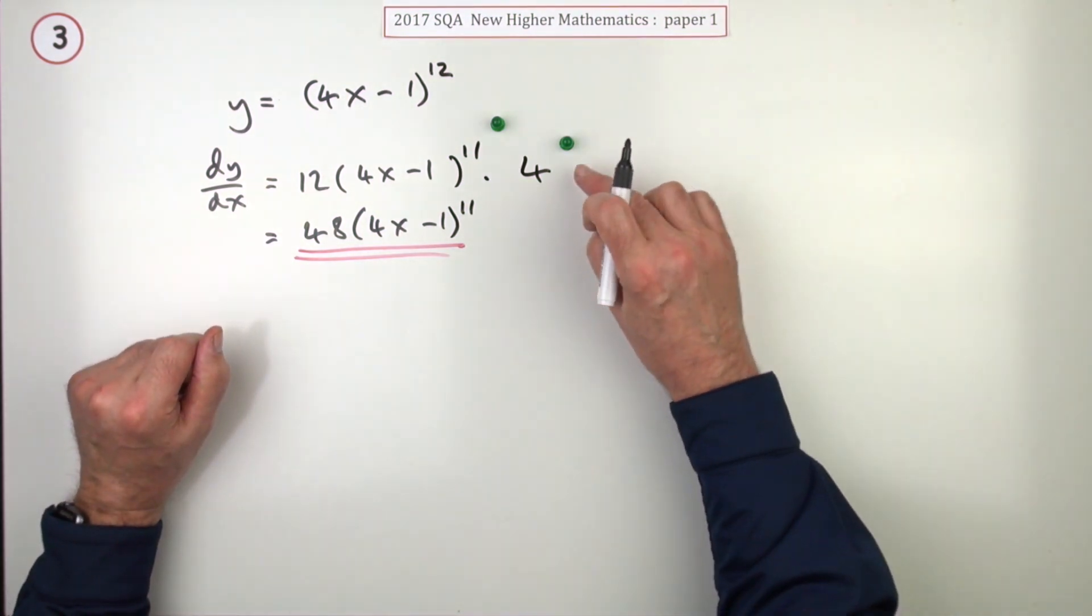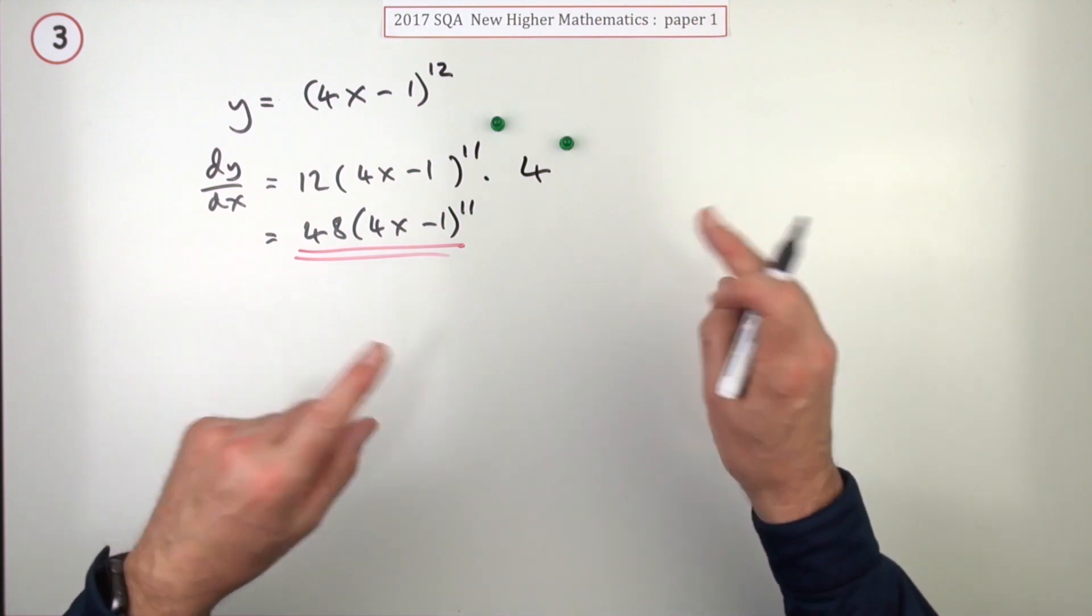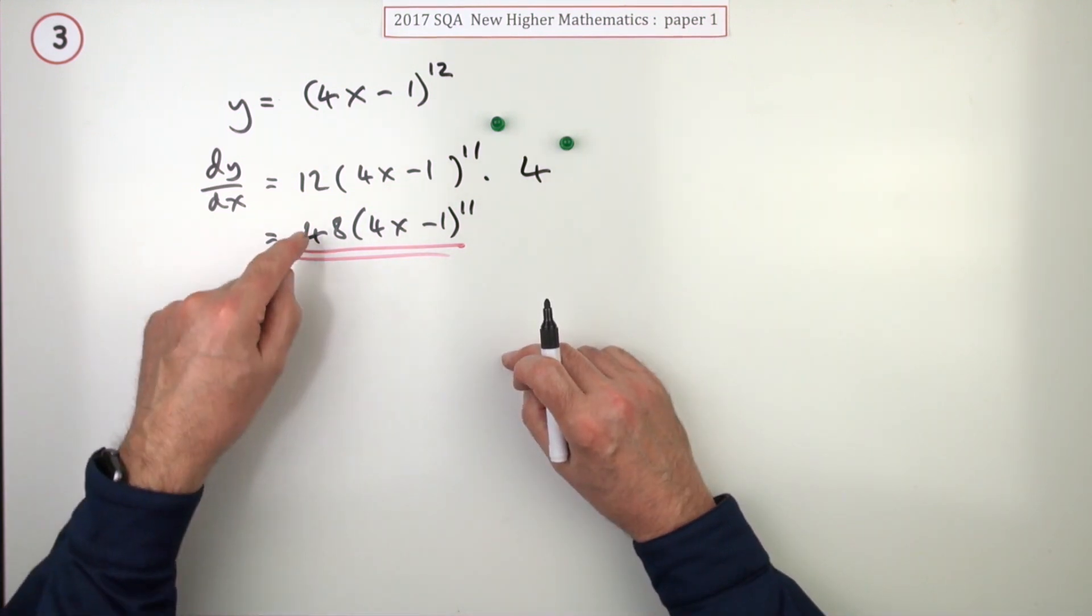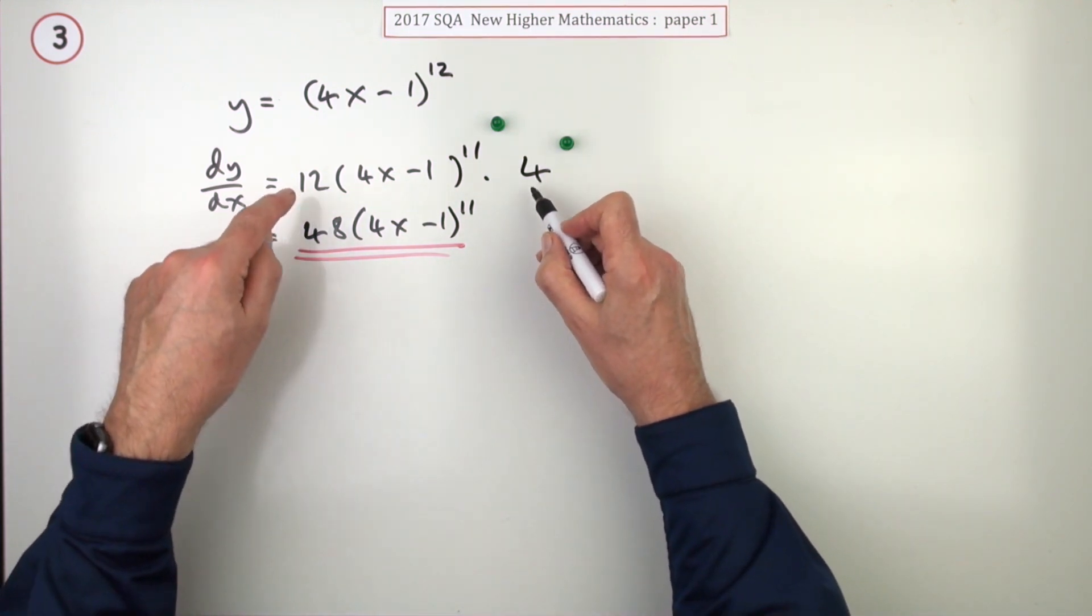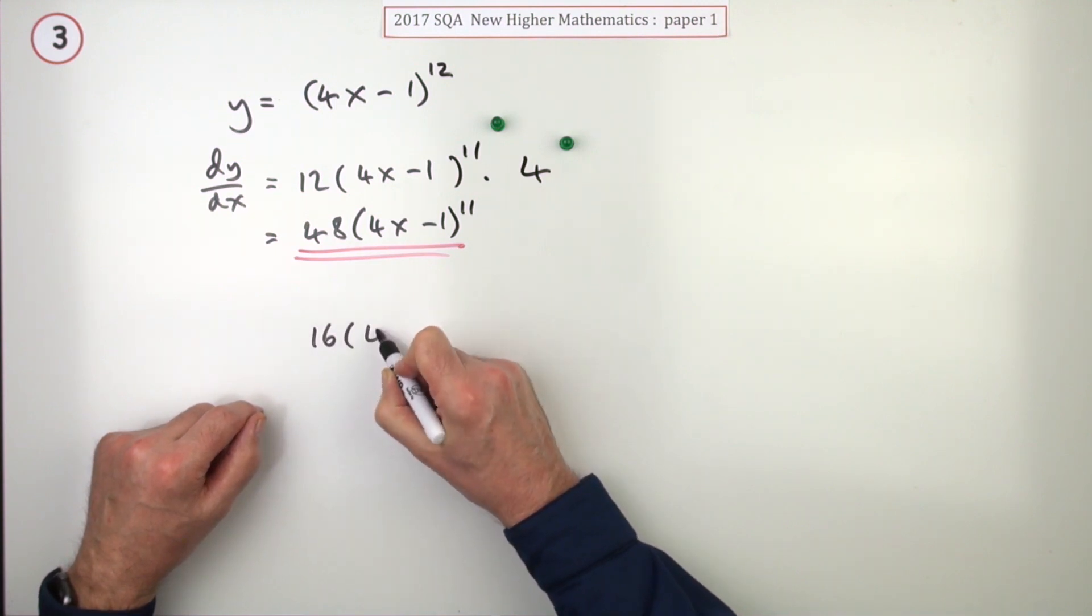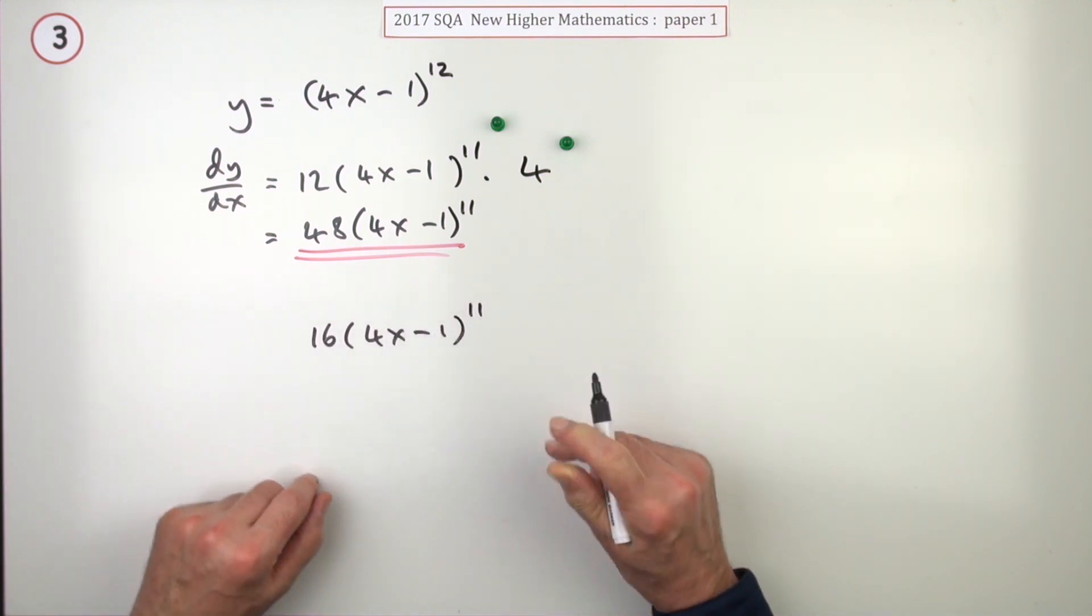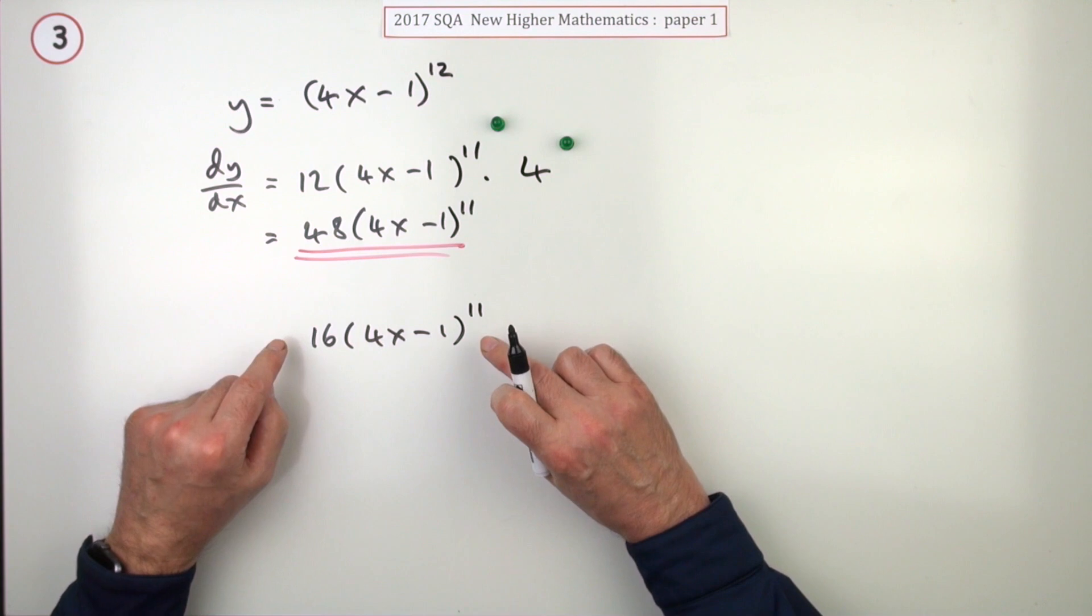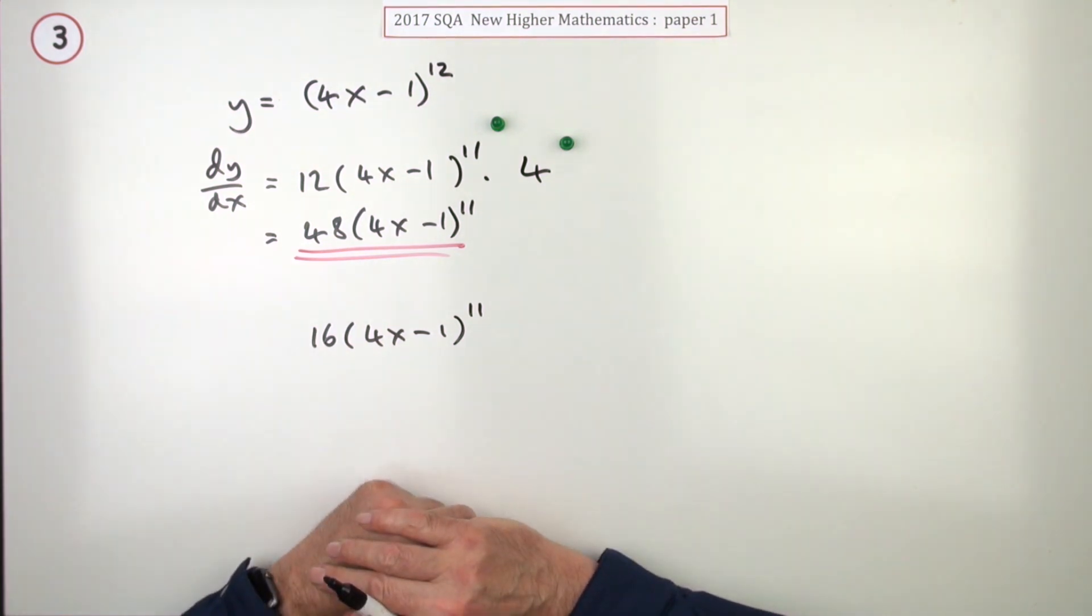The fact that the last mark ends there, that's the two marks. But again, you can't assume that's the case. If you then went on and made a mistake and said something like, 'Oh, that's 16 times (4x minus 1) to the 11'—which of course is completely wrong—you wouldn't be penalized because there were no more marks to be had.